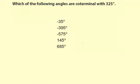Which of the following angles are coterminal with 325 degrees? Now a coterminal angle will have both an initial and terminal in the same place. And what that means is you're going to either be adding 360 degrees or subtracting 360 degrees, some multiple of 360 degrees.